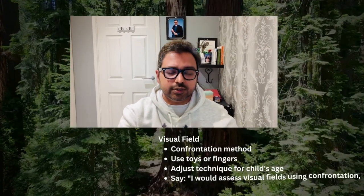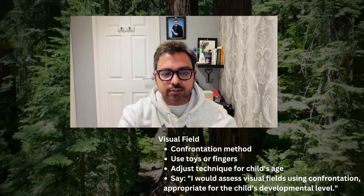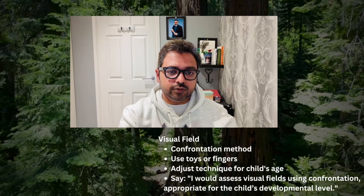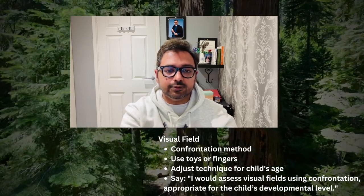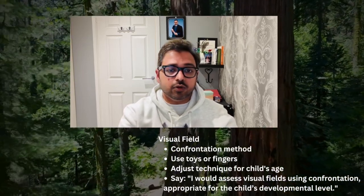Next, check the visual field using the confrontation method. Position yourself at arm's-hold distance and use toys or fingers. Adjust the technique according to the child's age. You should say 'I would assess the visual fields using confrontation appropriate for the child's developmental level.'